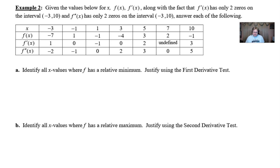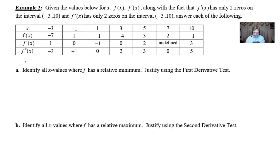Example 2 starts with: given the values below for x, f(x), f'(x) — and I should note that f''(x) is in the table as well — along with the fact that f'(x) has only two zeros on the interval negative 3 to 10, and f''(x) has only two zeros on the interval negative 3 to 10. Answer each of the following questions.